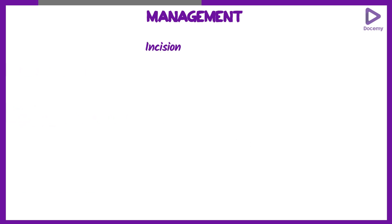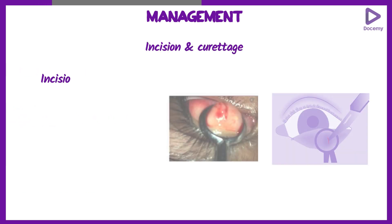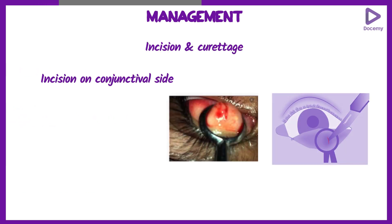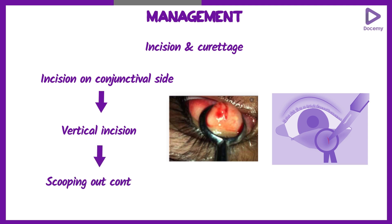For incision and curettage, you put an incision on the conjunctival side. You have to keep in mind that you are making a vertical incision on the conjunctival side, then scooping out the content. This is why the procedure is known as incision and curettage.